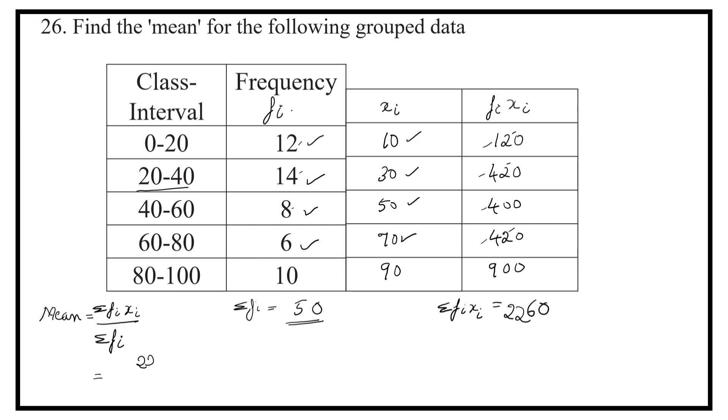Let us now substitute the values. Sigma fi xi is equal to 2260 upon sigma fi is 50. Here 0 and 0 get cancelled. 2260 by 50 is equal to 45.2.